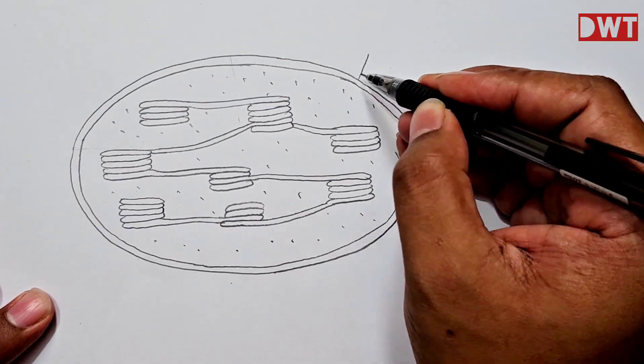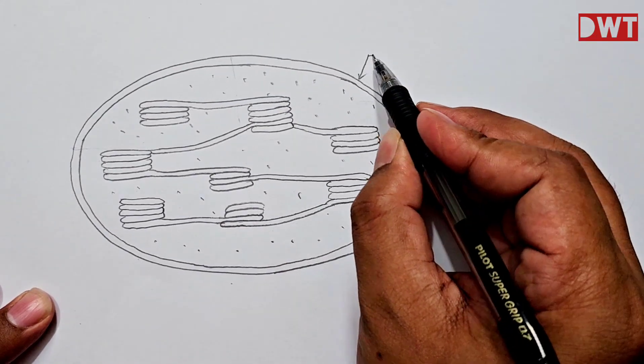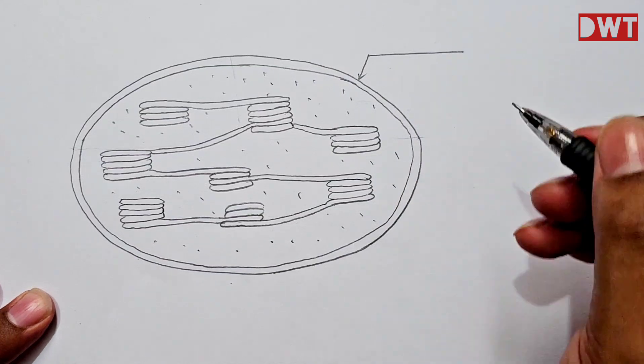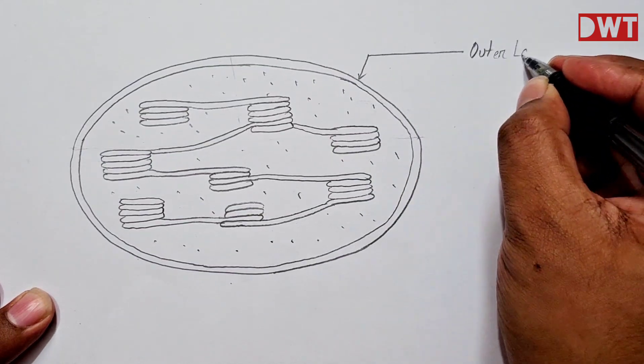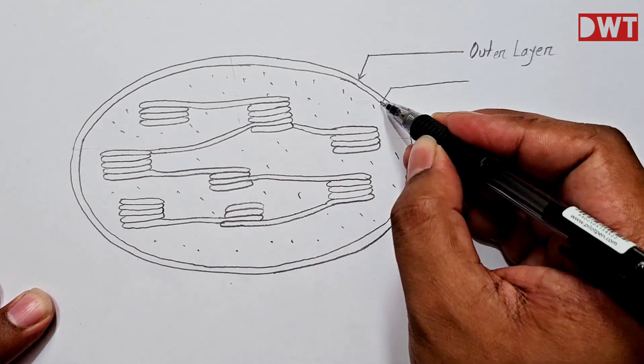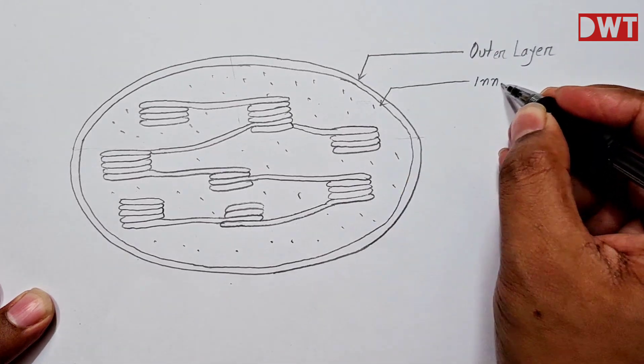Now it's time to indicate or label the different parts of chloroplast. The first one is outer layer and then second one is inner layer.